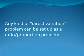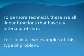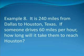Any kind of direct variation problem can be set up as a ratio-proportion problem. Direct variation problems involve a formula like distance equals rate times time, total cost equals unit price times quantity ordered, power equals current times voltage, voltage equals current times resistance, etc. To be more technical, these are all linear functions that have a y-intercept of zero.